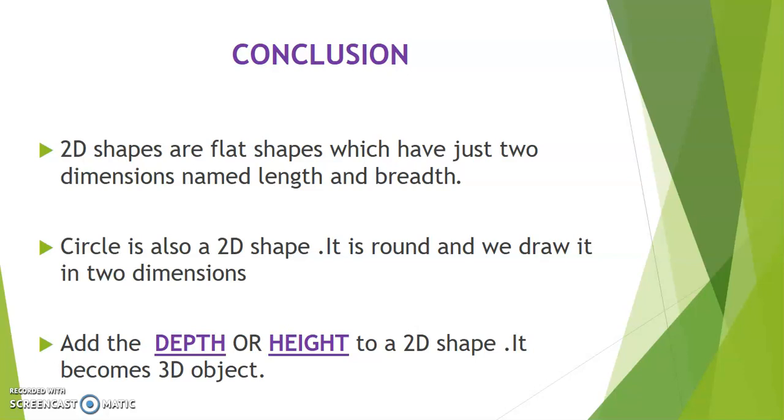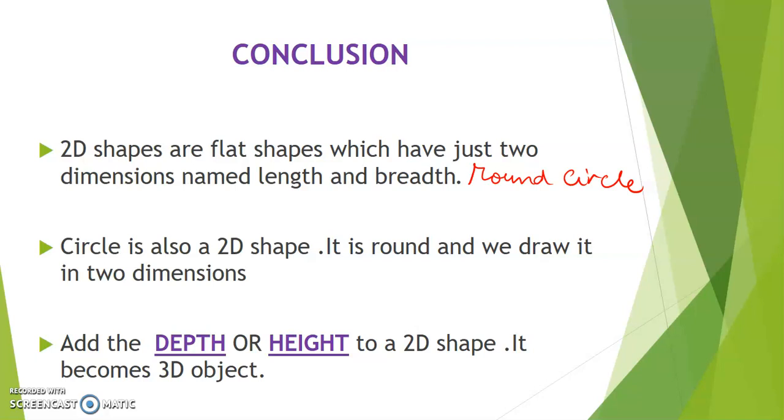Conclusion. 2D shapes are flat shapes which have two dimensions named length and breadth. They can be round as well like a circle. Circle is also a 2D shape. It is round and we draw it in two dimensions. When we add depth or height to a 2D shape, it becomes a 3D object. I hope you had wonderful knowledge about 2D and 3D shapes. Thank you.